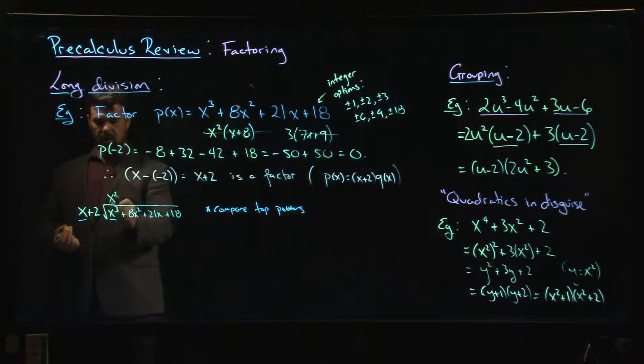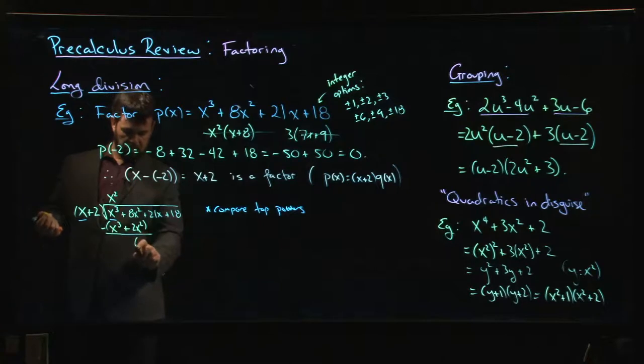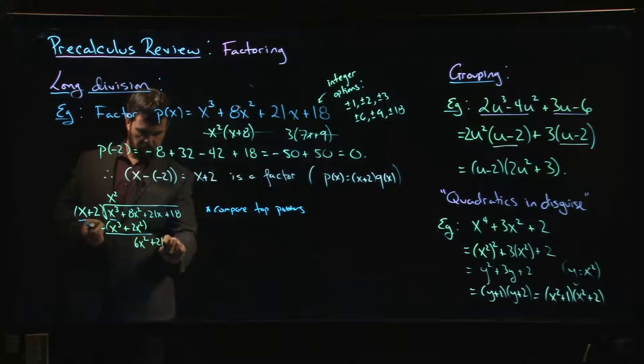And now, you take that x squared and you multiply by what you have out front. So x squared times x gives me x cubed. x squared times 2, 2x squared. And you subtract. There's a 0x and a 0 if you like. So we subtract x cubed minus x cubed. Those cancel. 8x squared minus 2x squared leaves me with 6x squared plus 21x plus 18.